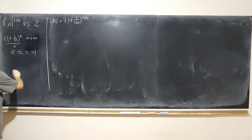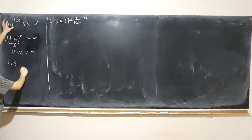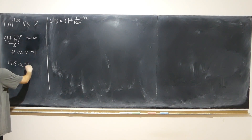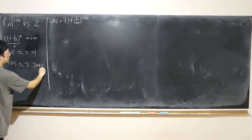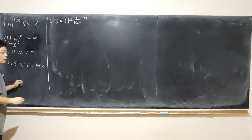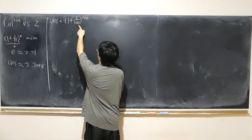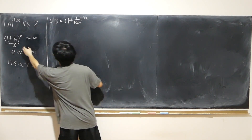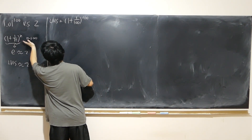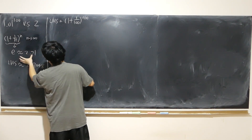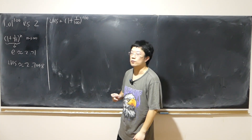Using a calculator, the left-hand side is approximately 2.7048 something, which makes perfect sense because 100 is already big enough — as n gets large enough, this gets close enough to its limit. But we still want to prove it rigorously.